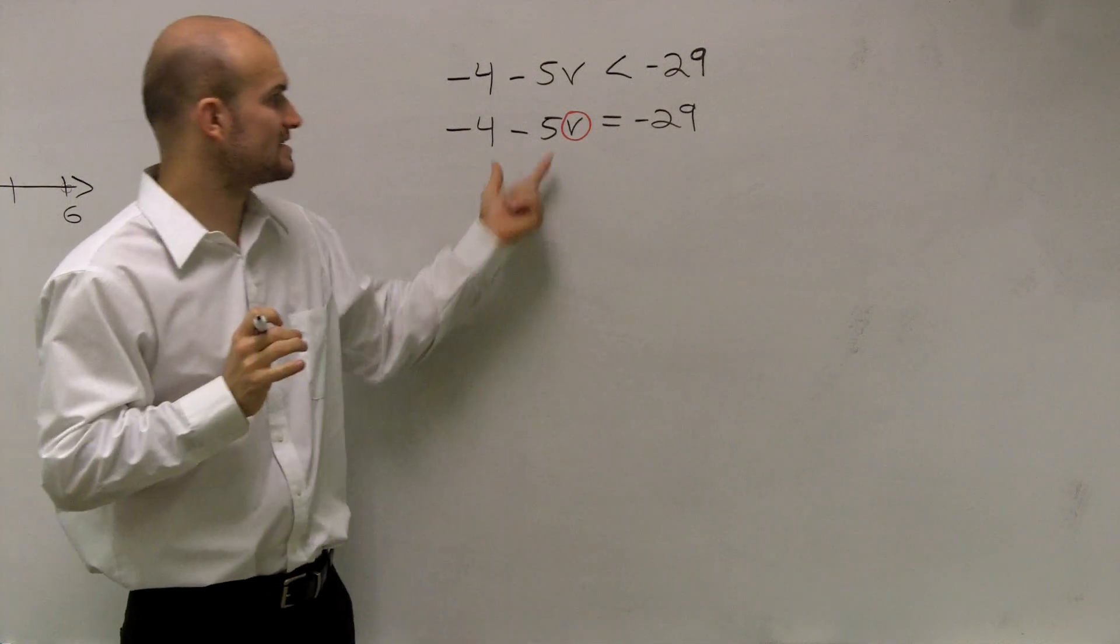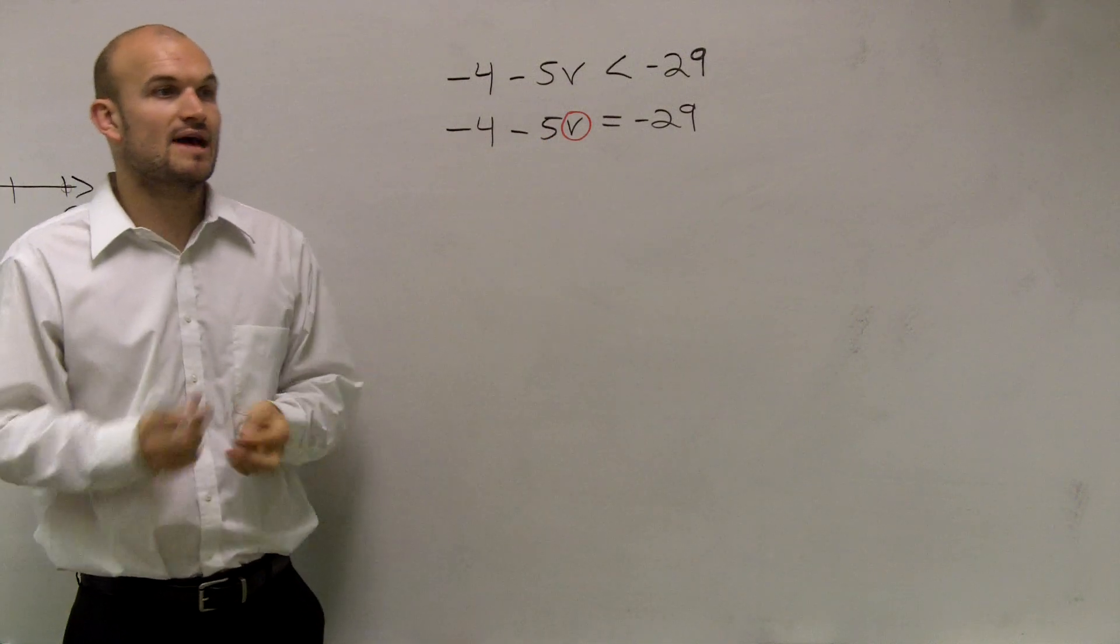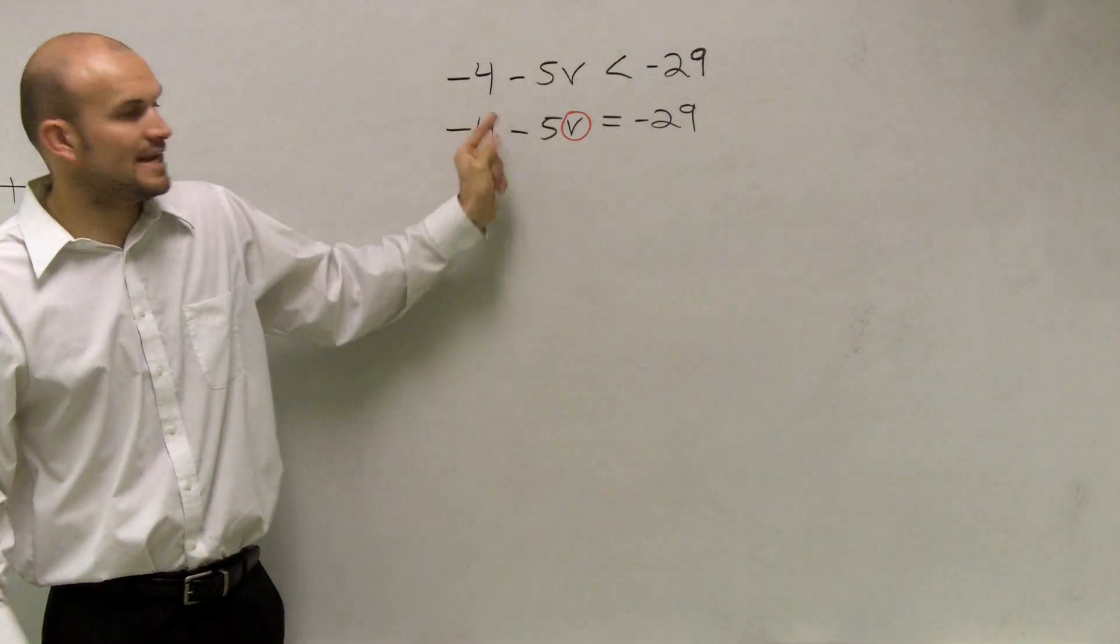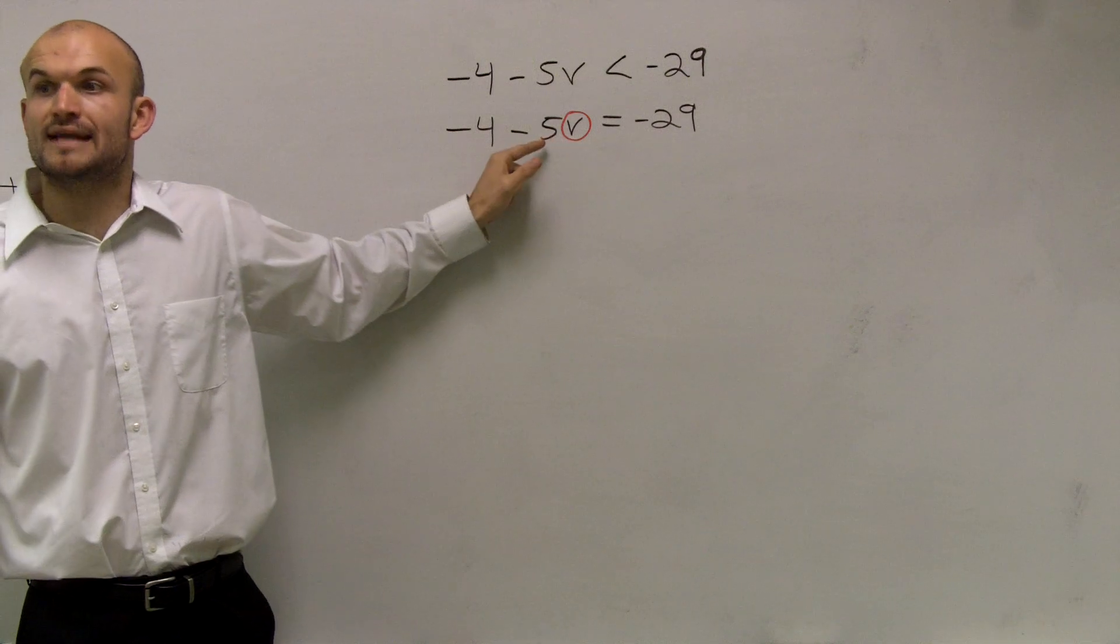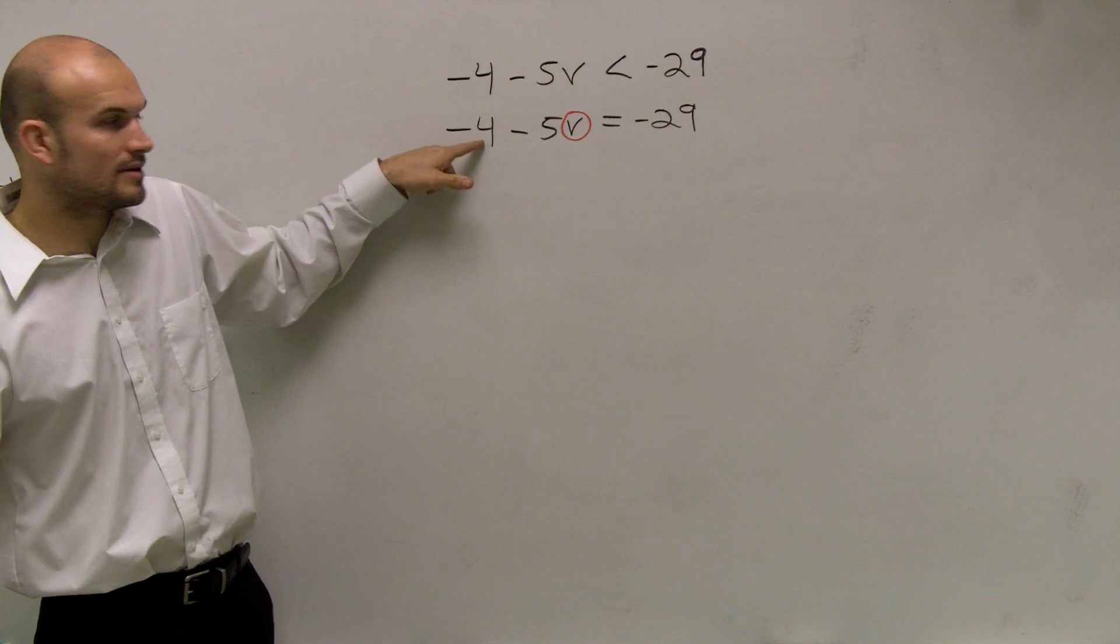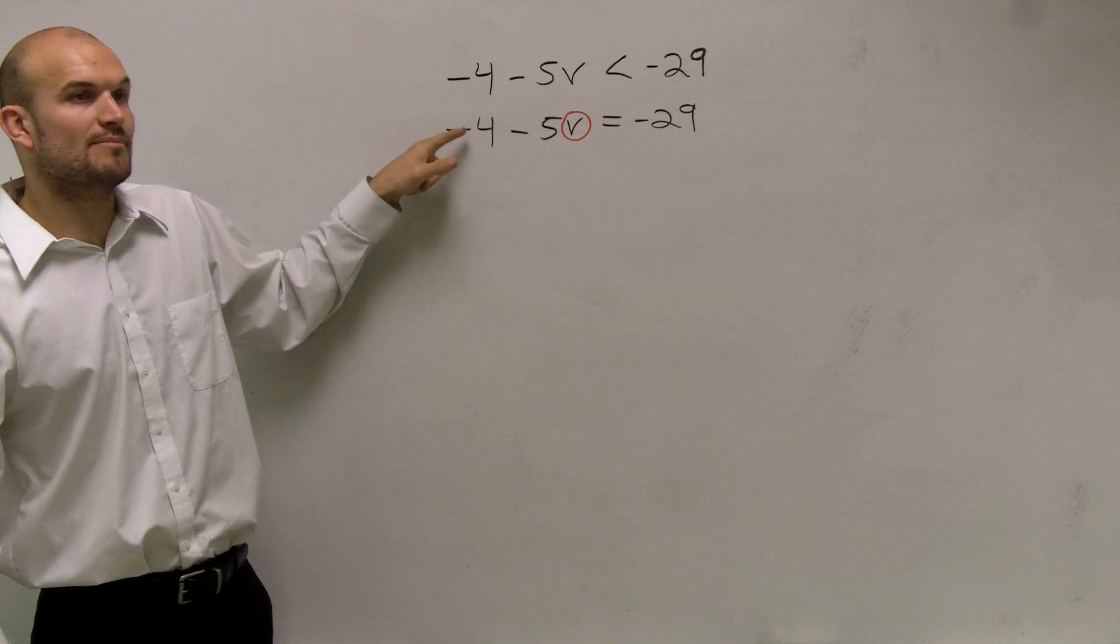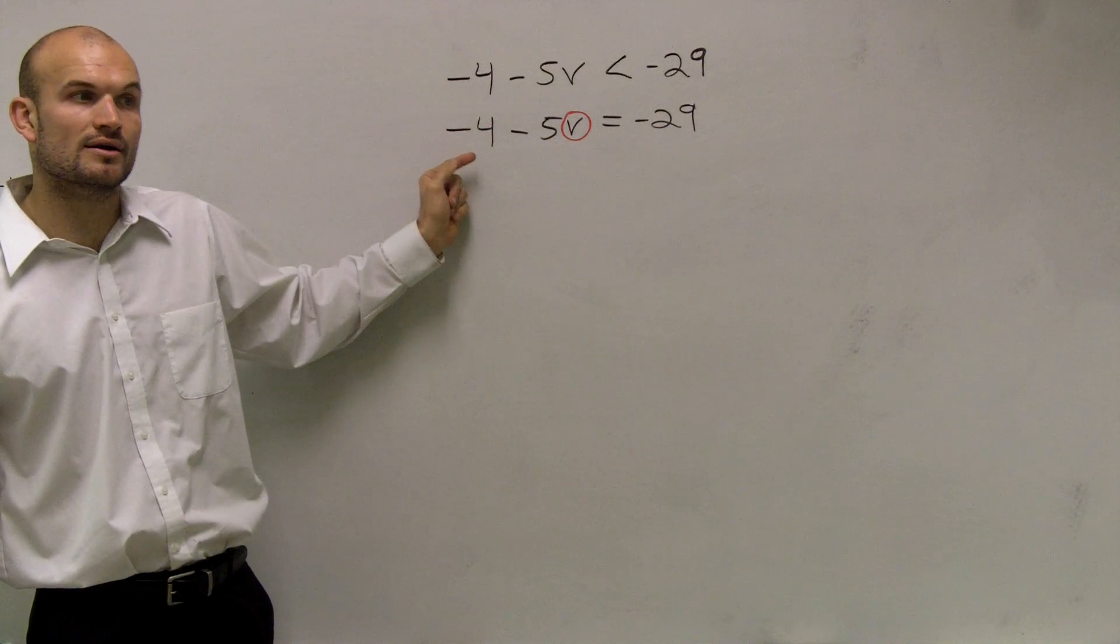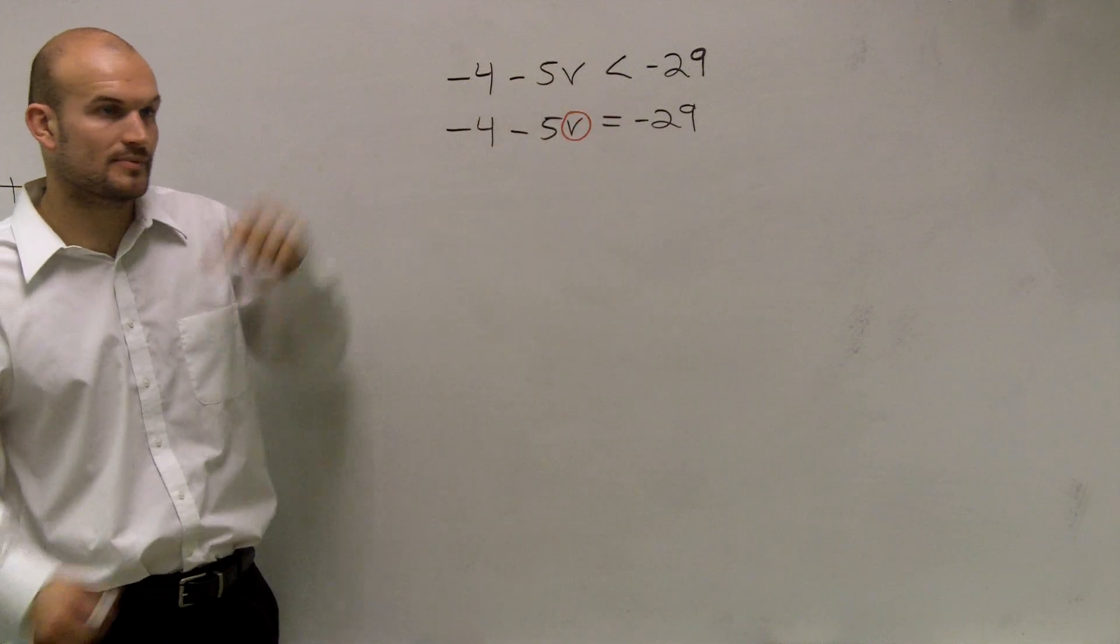There are two numbers that are on the same side of v. I have a negative 5 and I have a negative 4. Then we need to determine what those two numbers are doing. Negative 5, since it's right next to the v, is multiplying. So we say negative 5 is multiplied by v. Then I have a negative 4. What I can say is my 4 is being subtracted from my v. Since it's a negative 4, I'm taking 4 and subtracting it from v.